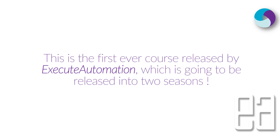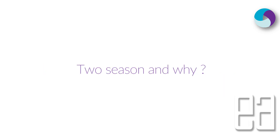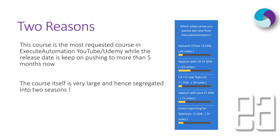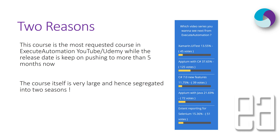Interestingly, this is the first ever course released by Execute Automation that is going to be released in two seasons. There are two reasons for this. First, this is the most requested course on the Execute Automation YouTube channel, Udemy, and blog, with the release date pushed back more than 5 months. The polling on the Execute Automation website has been bursting and people keep asking about Appium with C-Sharp. So this is the right time to release at least Season 1, so that it can serve as preparation for the Season 2 framework development topics.